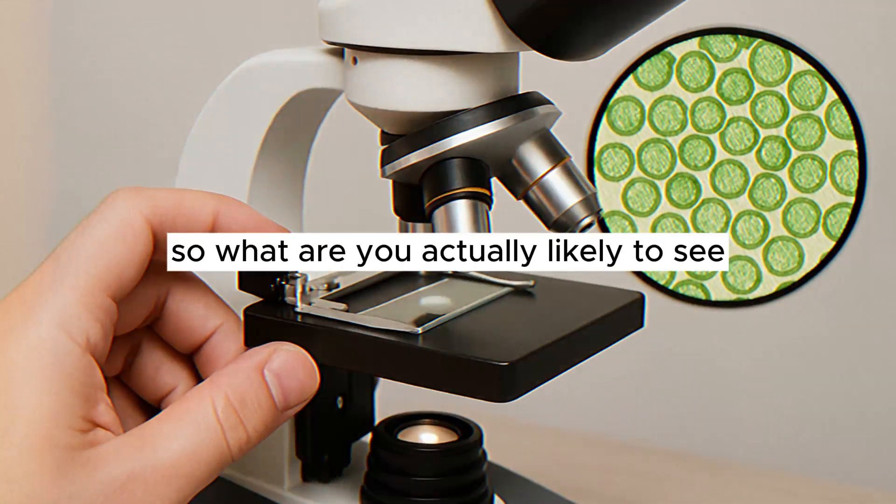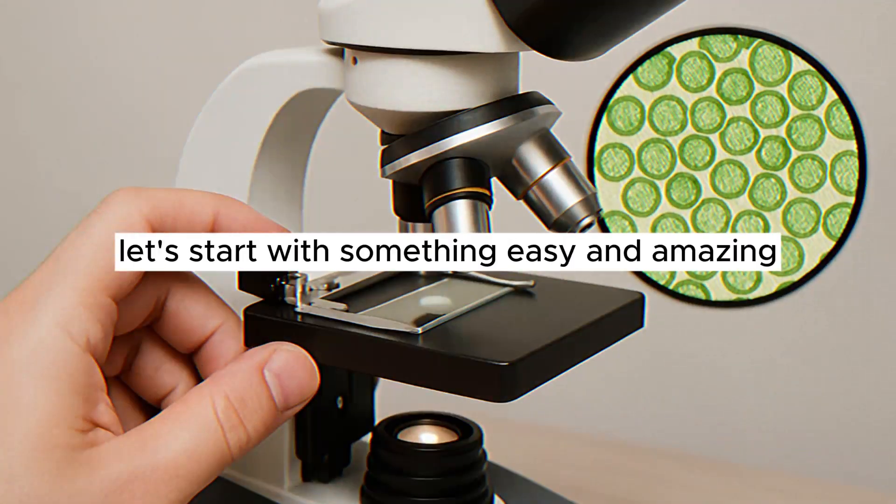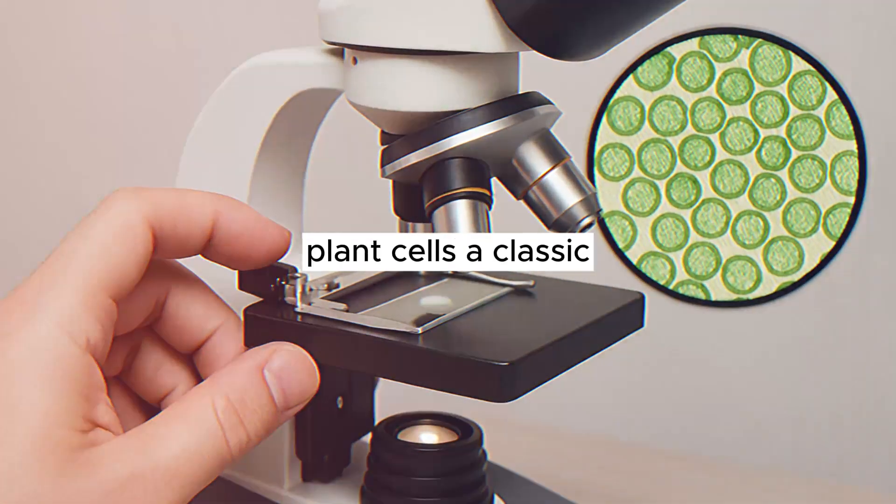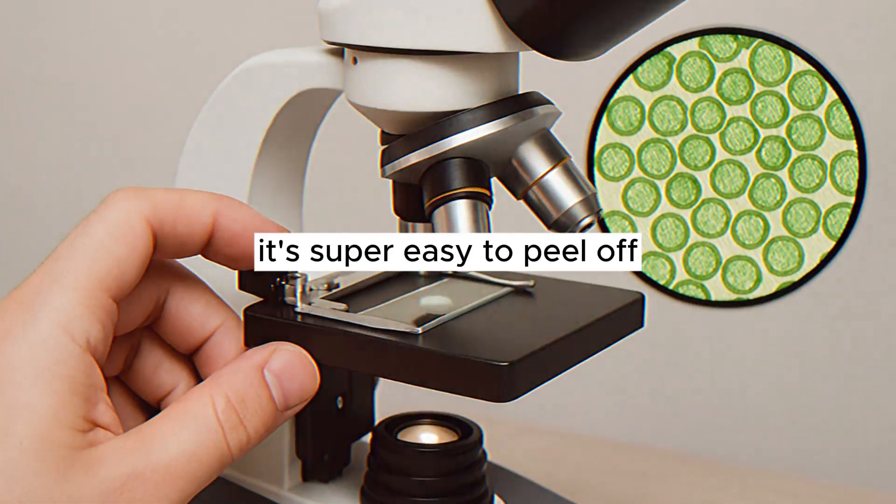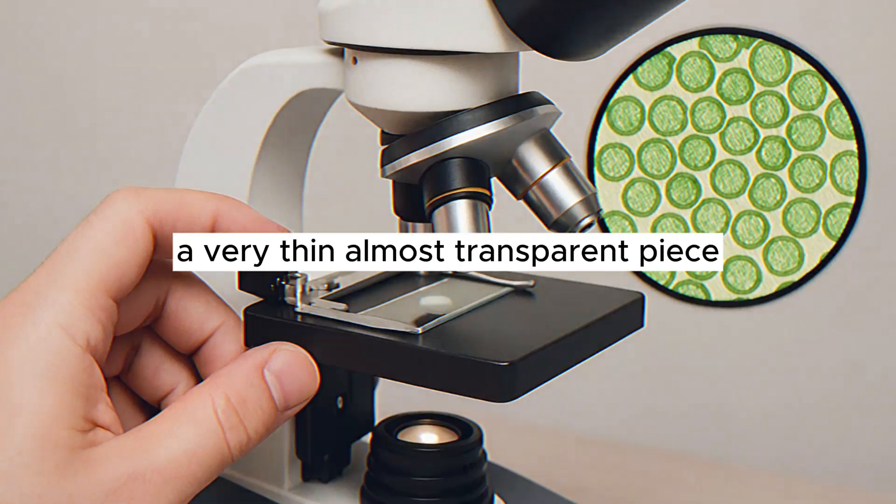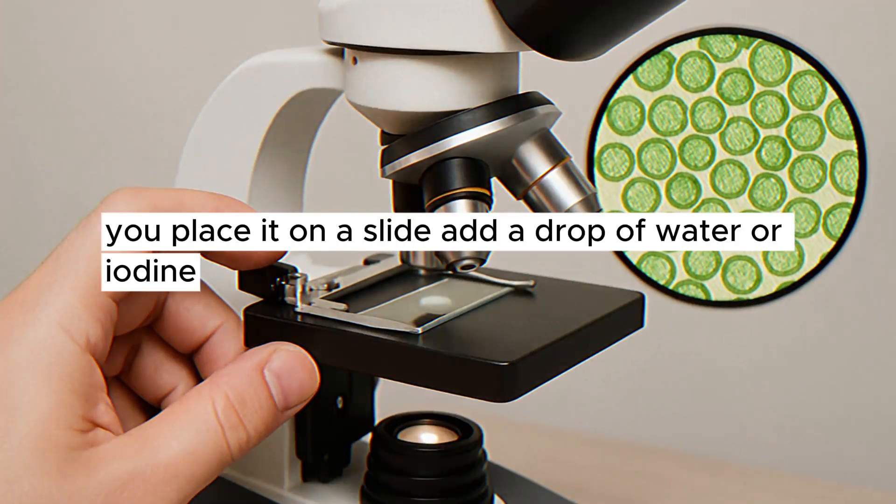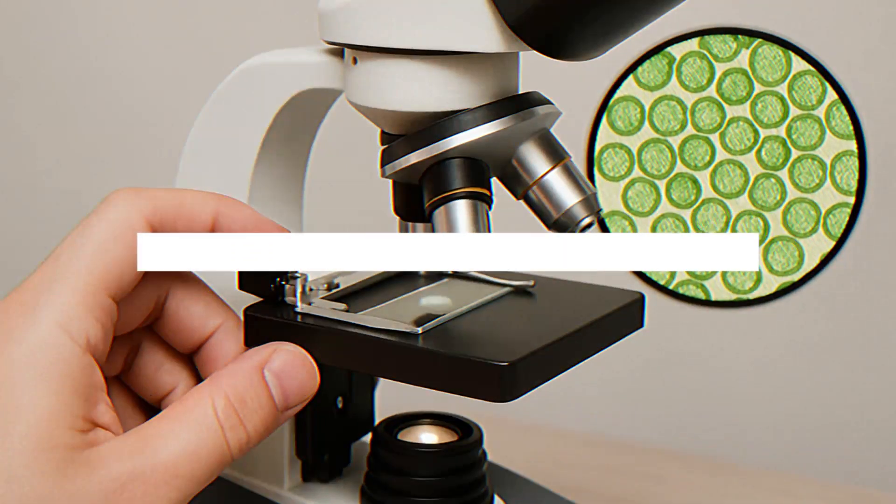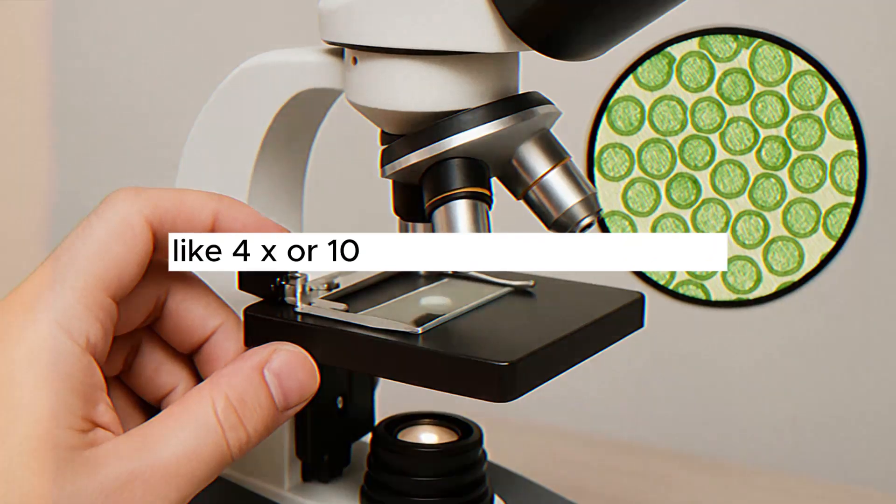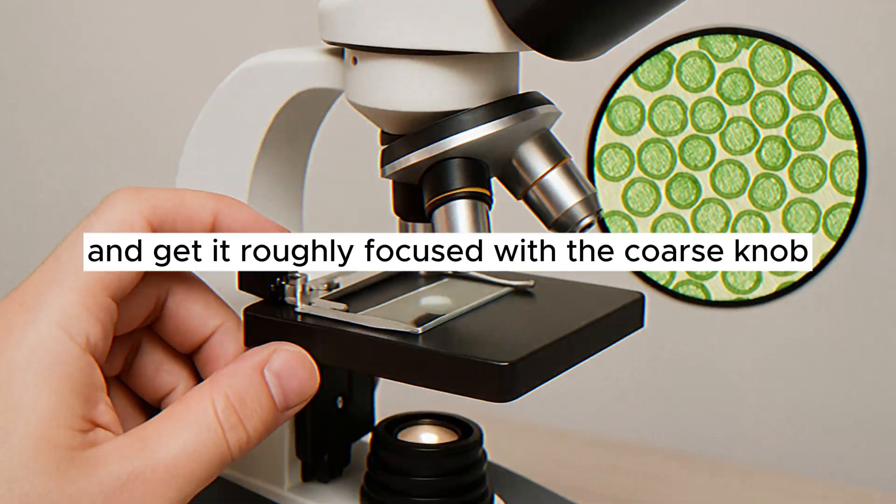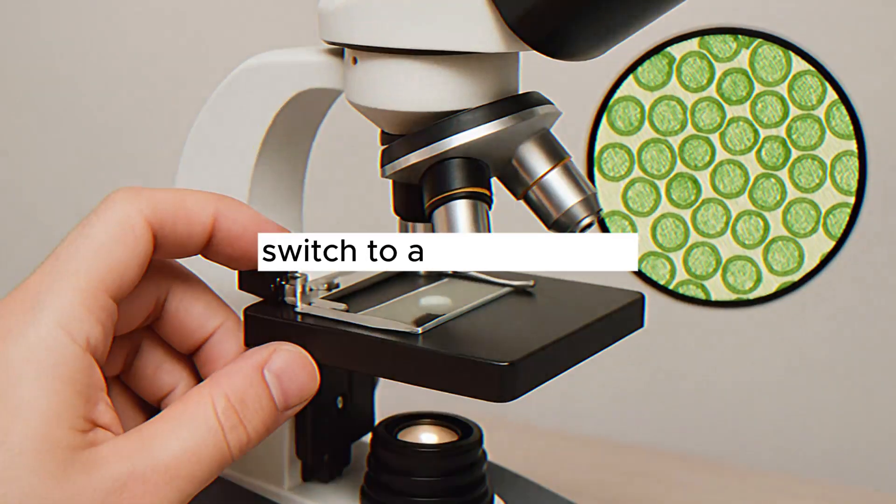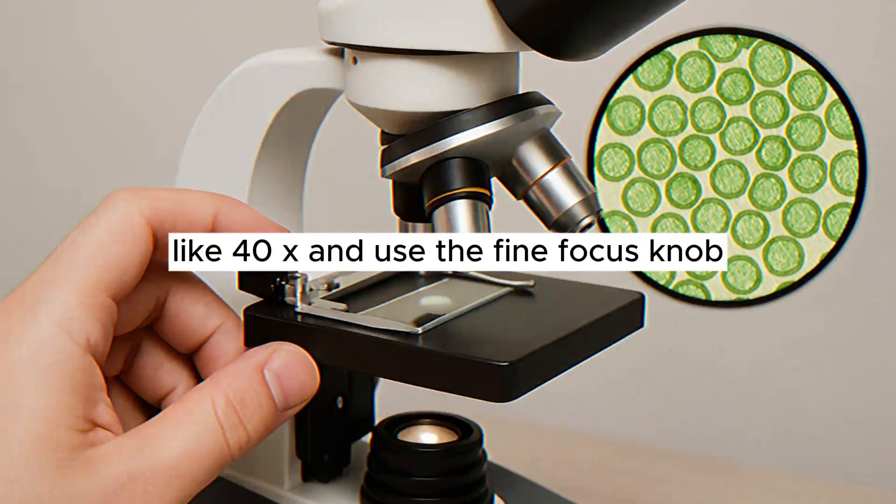So, what are you actually likely to see? Let's start with something easy and amazing: plant cells. A classic beginner specimen is a thin layer of onion skin. It's super easy to peel off a very thin, almost transparent piece. You place it on a slide, add a drop of water or iodine, cover it, and pop it under the microscope. Start with the lowest power objective, like 4x or 10x, to find your specimen. It might look like a grid or a bunch of bricks. Once you find it and get it roughly focused with the coarse knob, switch to a higher power like 40x and use the fine focus knob.